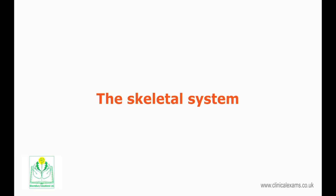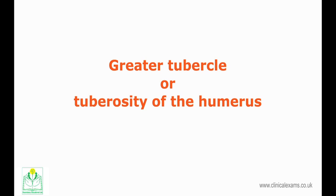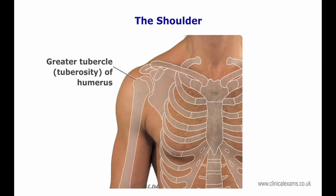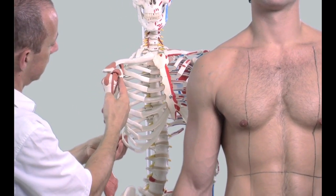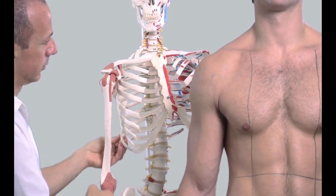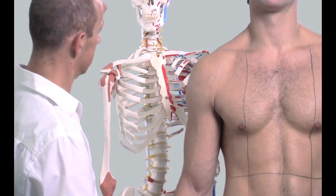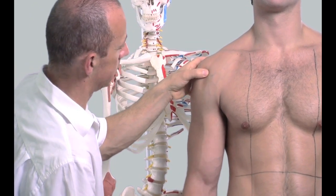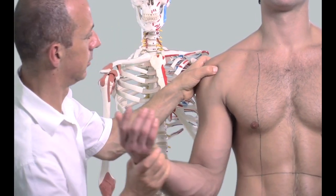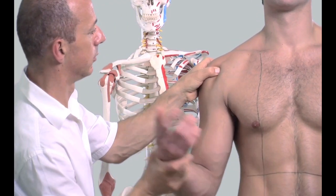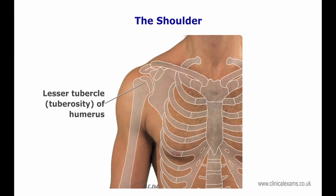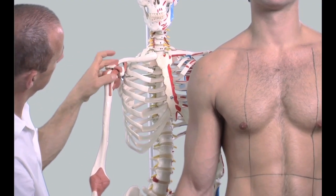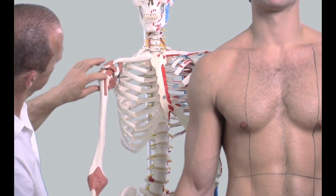The skeletal system. The greater tubercle or tuberosity of the humerus is located inferolaterally below the arch of the acromion. The coracoid process is slightly medial to the midpoint on this line, and may be identified by placing modest pressure over this region whilst the arm is rotated internally and externally. The lesser tuberosity of the humerus is more proximal to the acromioclavicular joint and, in relation to the greater tuberosity, it is slightly more medial and inferior.